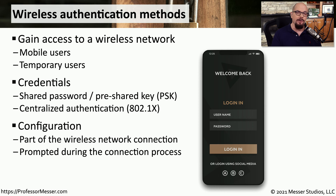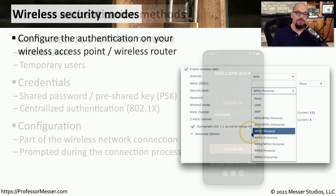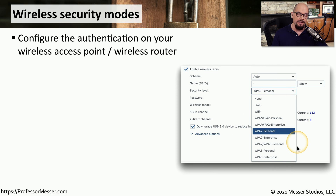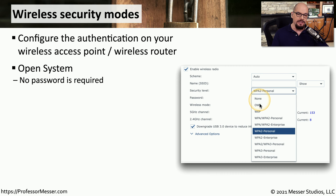The configuration for pre-shared key or 802.1x is usually configured on the wireless access point itself. Anyone connecting to that wireless network is normally prompted to add their authentication credentials as part of the connection process. Here's a good example of configuring authentication on a wireless access point — you can see there are a number of different options. Anything with a personal connection would be a pre-shared key, and anything labeled enterprise would be 802.1x. If configured with no security or open security, anyone can connect without any authentication.